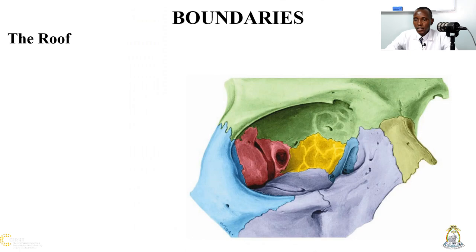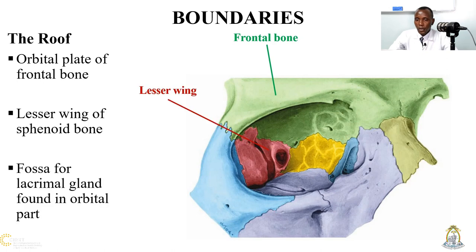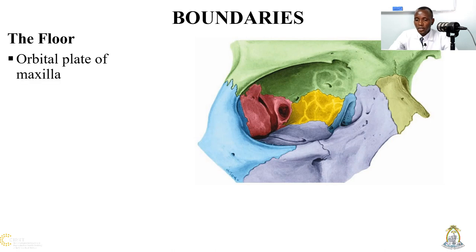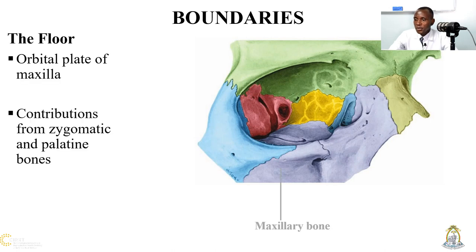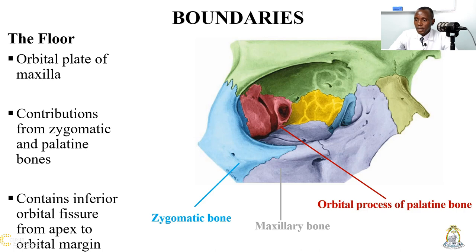The roof medially is contributed by the orbital plate of the frontal bone, with some other contributions from the zygomatic bone and the palatine process of the palatine bone. The floor contains the inferior orbital fissure, from the apex to the orbital margin.